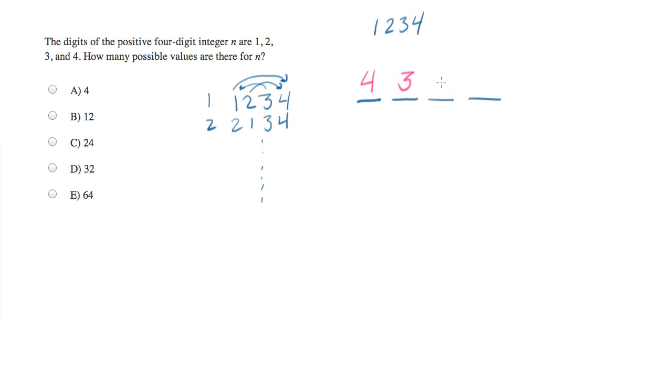And then when I make my choice for the third digit, two of them have now been chosen. So hypothetically, say those two are gone. Now I have two options left.